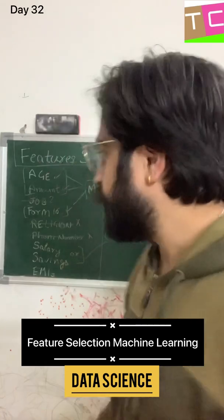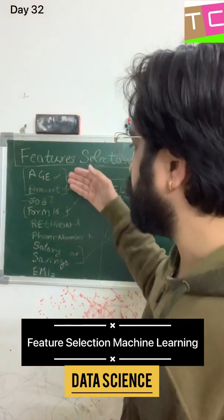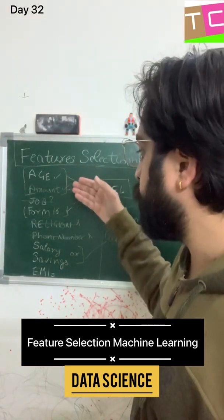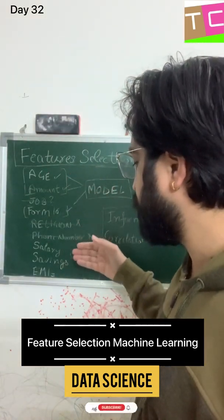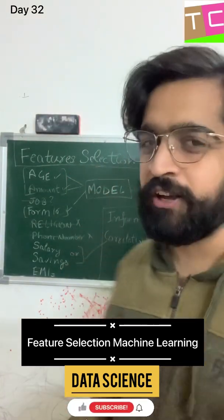In a loan application, for example, we have several features: age, loan amount, foreign exchange, religion, salary, savings, and EMIs.